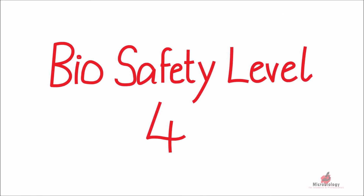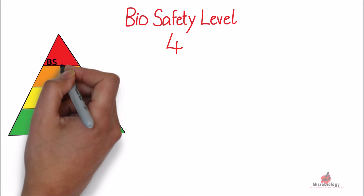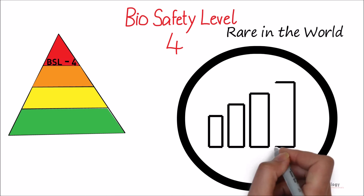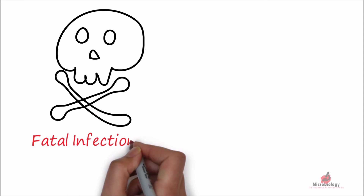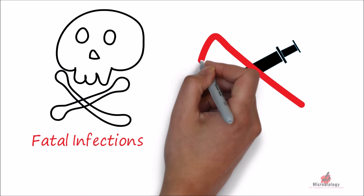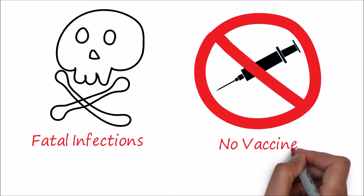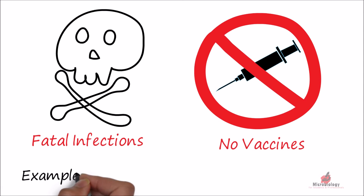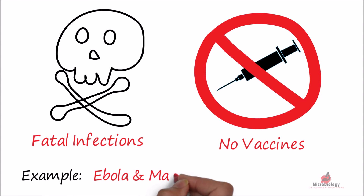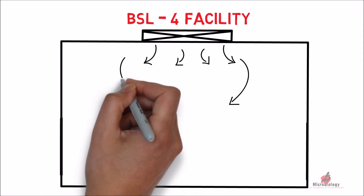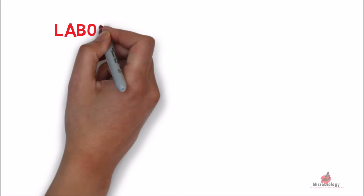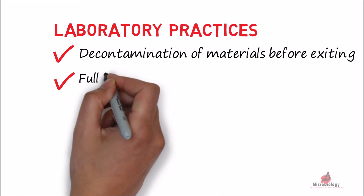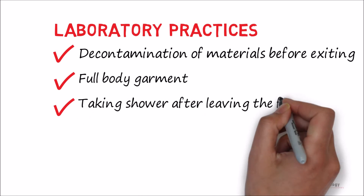Biosafety Level 4 facilities are rare in the world, being the highest level of biological safety. BSL-4 microbes cause fatal infections, and the diseases caused by these agents usually do not have vaccines or treatment. Two examples of such microbes include Ebola and Marburg viruses. The BSL-4 facility must be isolated and have dedicated supply air and exhaust air. In addition to the practices of other BSL laboratories, additional practices must be followed in BSL-4 labs.